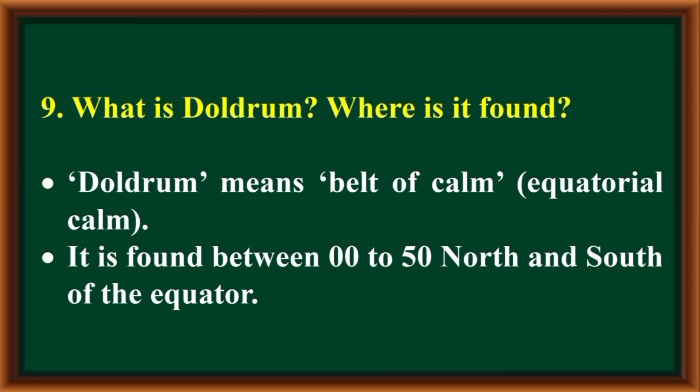What is doldrum? Doldrum means belt of calm, also called equatorial calm. It is found between 0 degrees to 5 degrees north and south of the equator.